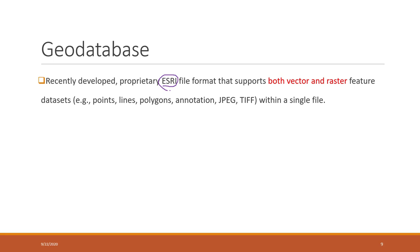This type of database can support both vector data and raster data, and also non-spatial data. The vector data includes spatial features like lines, points, polygons, and also text information. Raster data includes formats like JPEG and TIFF.